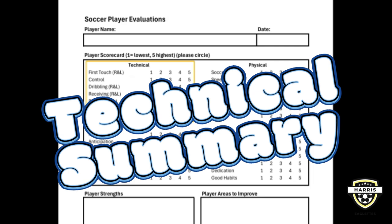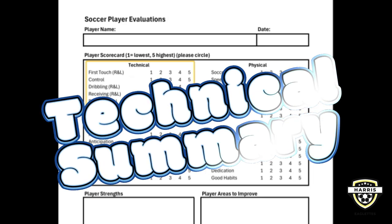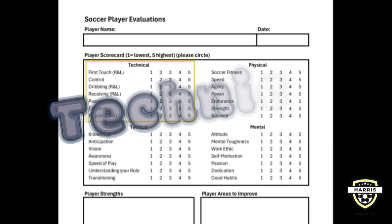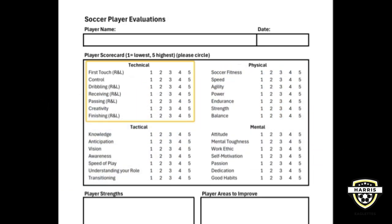Thinking about all the pieces of the technical side of things, these attributes are vital for becoming a skilled soccer player. A solid first touch, good control, and effective dribbling help you manage the ball well, while receiving and passing create connections with your teammates. Creativity adds flair to your play, and finishing converts opportunities into goals. By focusing on these skills, you'll enhance your game and contribute significantly to your team's success. Next, we'll be moving to tactical.